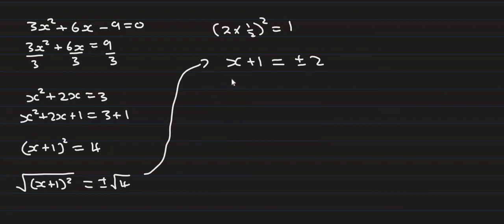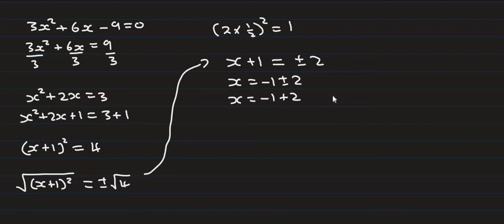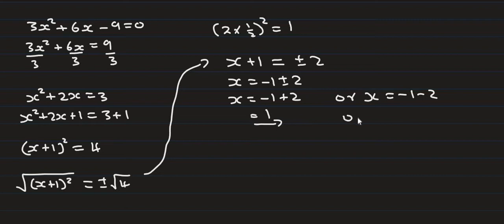Square root of 4 is 2, so x plus 1 equals plus or minus 2. Resolving for x: x equals negative 1 plus or minus 2. So x equals negative 1 plus 2, which gives x equals 1. Or x equals negative 1 minus 2, which gives x equals negative 3.